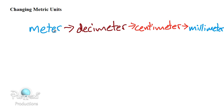Okay, changing metric units. In the last example we had 234 meters, and we changed them to things like decameters, hectometers, and kilometers, which are all larger units of measurement than a meter.